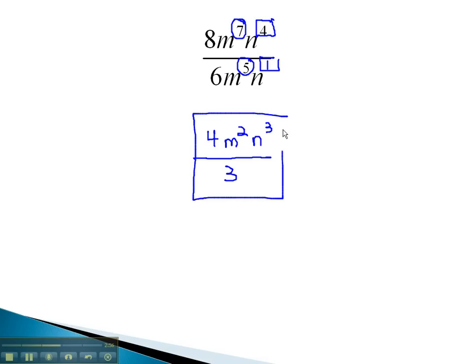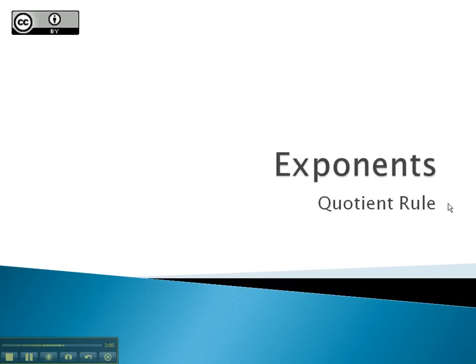And this becomes our final solution, 4m squared n cubed over 3. The quotient rule asks us to subtract exponents when simplifying our expressions.